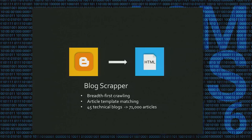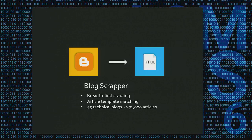The blog scraper conducts breadth-first crawling and performs article template matching, because not all web pages on a blog are articles — some are archive pages or login pages. This allows us to collect 71,000 articles from 45 technical blogs.